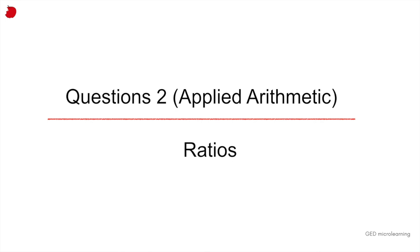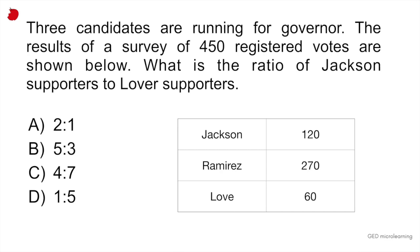Question 2. Applied arithmetic. This is a ratios problem. Three candidates are running for governor. The results of a survey of 450 registered voters are shown below. What is the ratio of Jackson supporters to Love supporters?